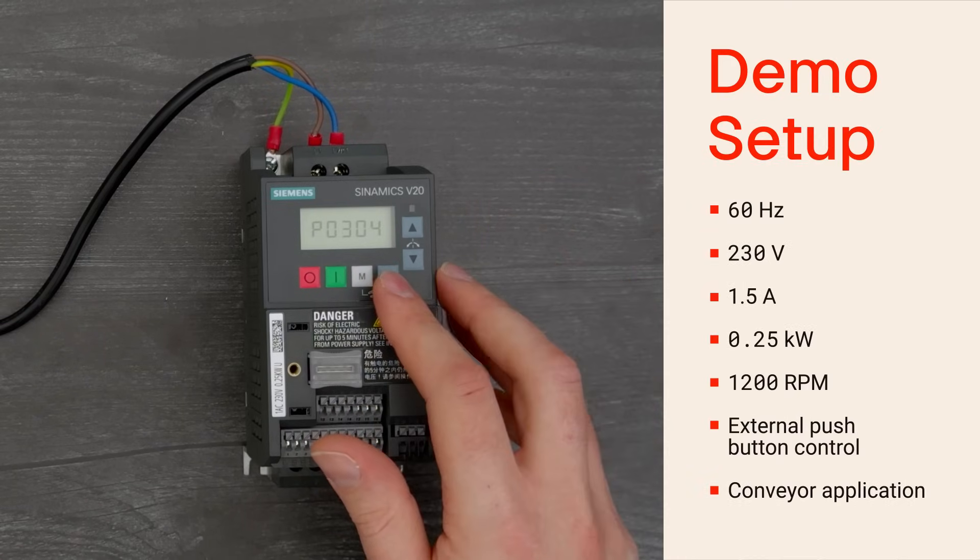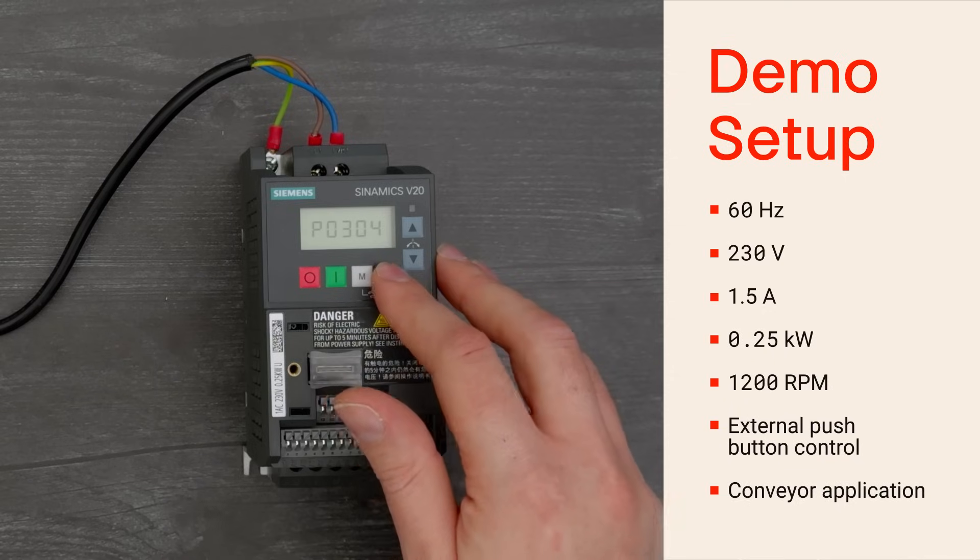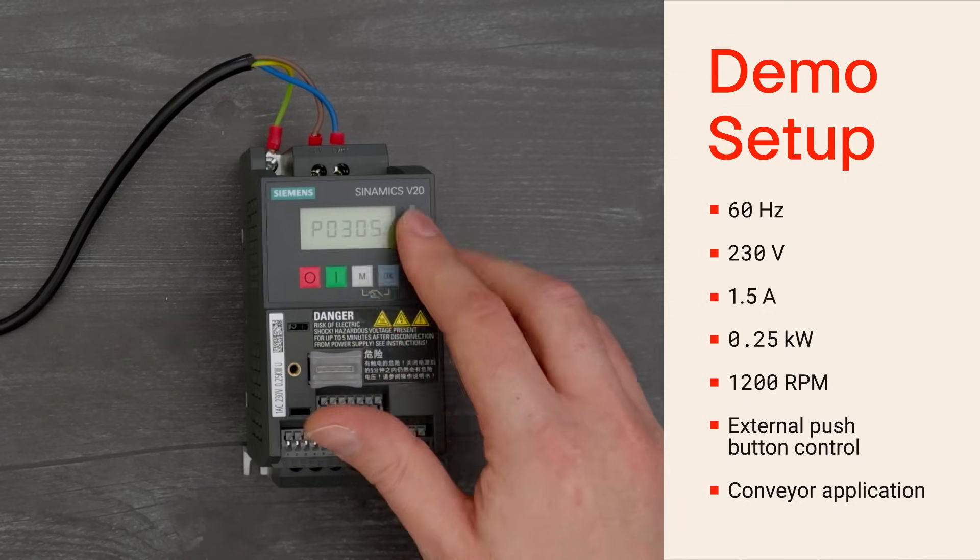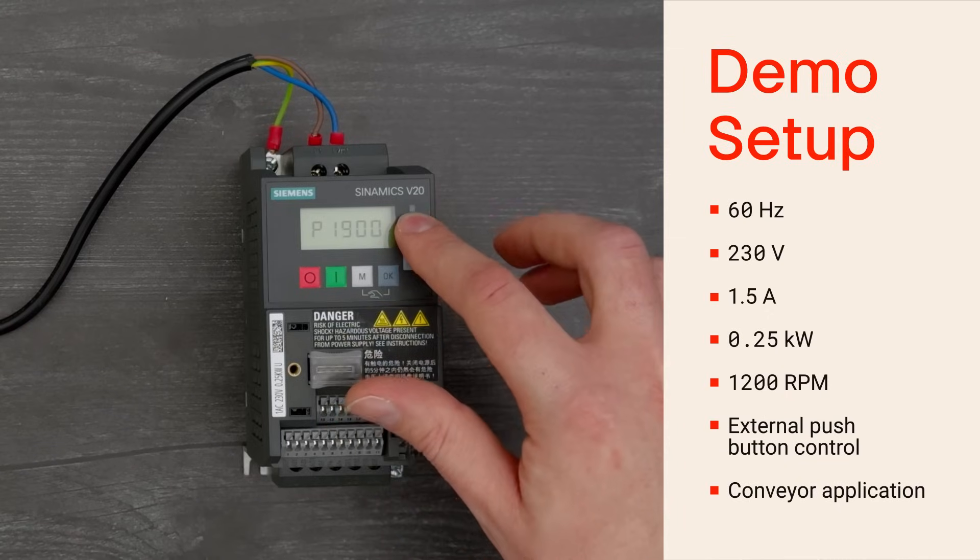Press OK, and you'll be in the setup menu where you can quickly commission the drive with the rated motor voltage, current, power, and other settings. Set each of these according to your motor's rating plate.